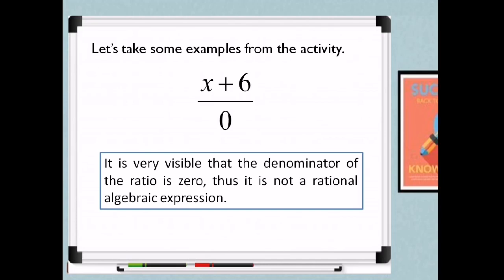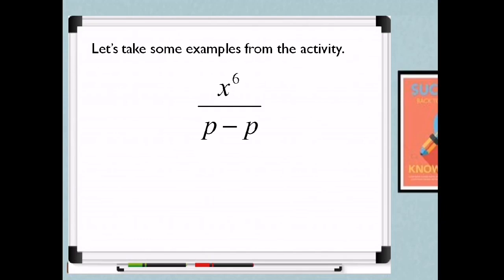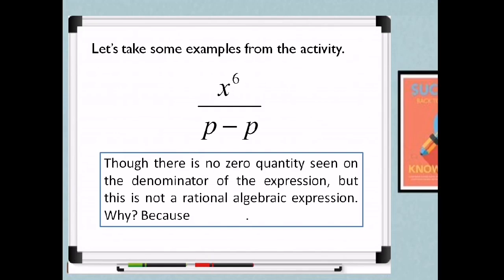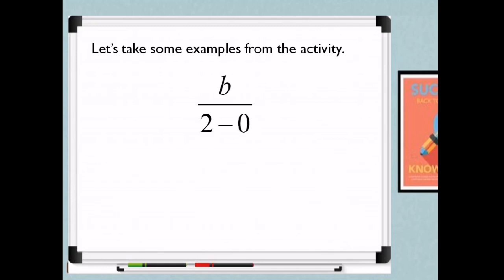How about the third example? You have x to the 6th over P minus P. Though there is no explicit zero visible in the denominator, this is not a rational algebraic expression. Why? Because P minus P equals zero. Therefore, we will have a denominator which is zero, and that makes it not rational.